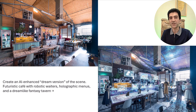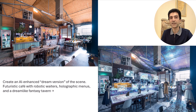Next use case is building a futuristic cafe — robotic waiters, holographic menus, glowing neon signs. You can literally build a sci-fi movie scene in seconds. But here is where limitations pop up: text. AI still struggles with writing legible signs. But who cares? Just crop it out and use another tool like Microsoft Paint to post-process it. This still looks futuristic enough to impress everyone.